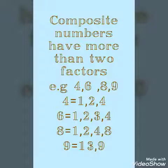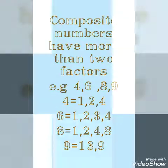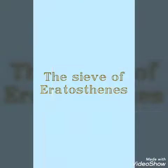To pick out the prime and composite numbers we have a very simple pattern known as the Sieve of Eratosthenes. The Greek mathematician Eratosthenes devised a very simple method of sorting prime numbers less than 100. This method is known as the sieve.